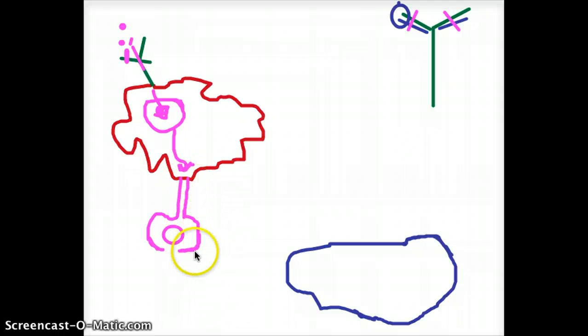Now this is the MHC class 2. What exactly is MHC class 2? This is a structure present in the macrophage which will present the antigen to the T cells. Imagine this is the T cell. The T cell has T cell receptor sticking out of here, just like that.